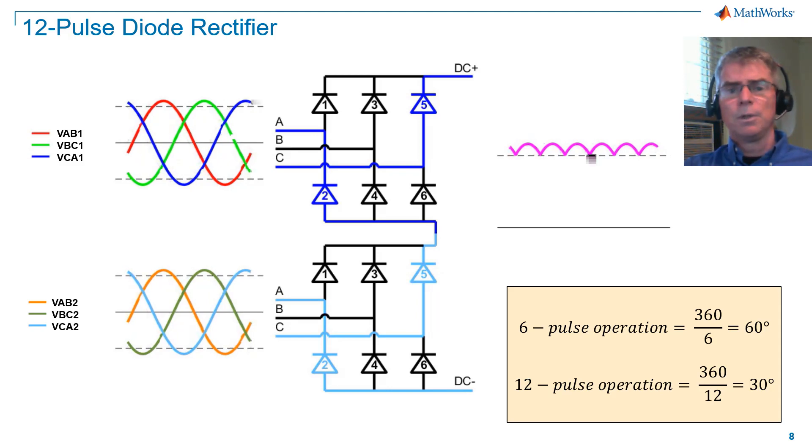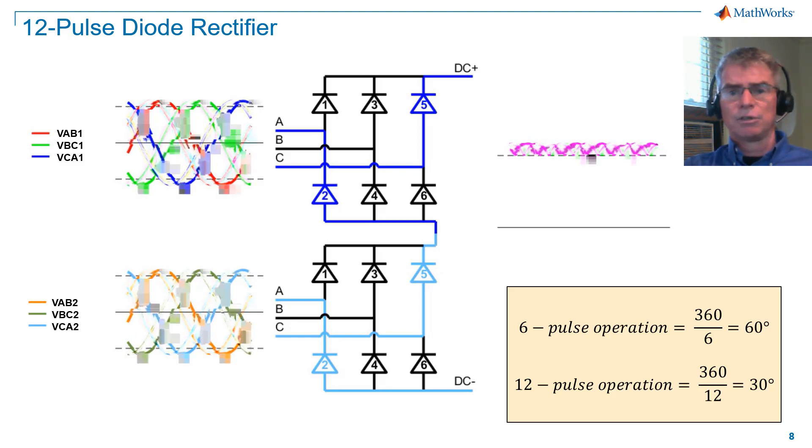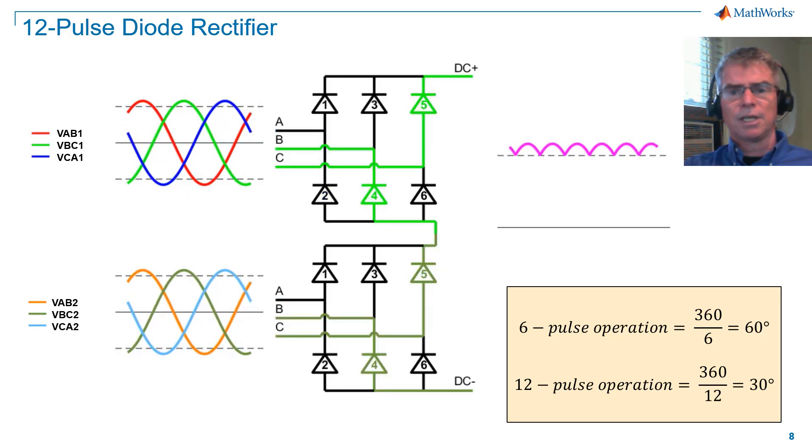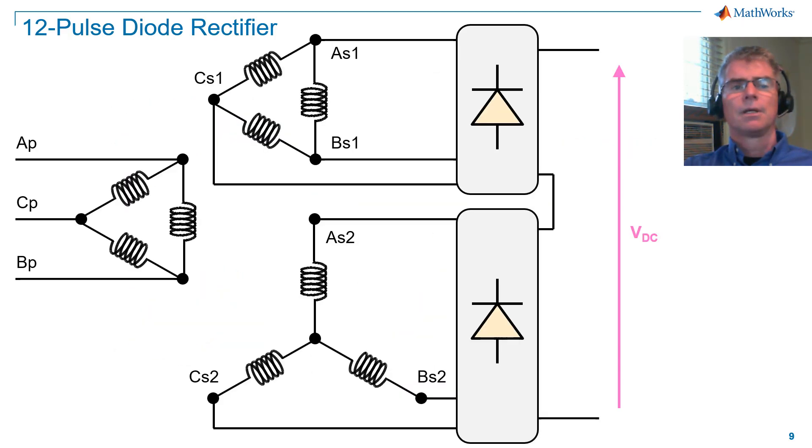To do this, we phase shift the lower secondary relative to the upper secondary. Here we have a 30-degree phase shift between the upper and lower secondaries. I've changed the lower secondary to a star configuration and left the upper secondary as a delta D1. Let's see what happens now.